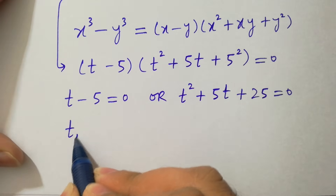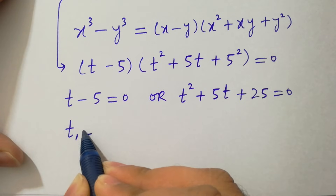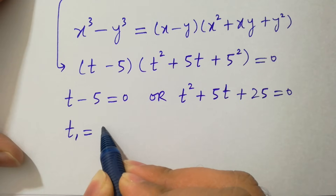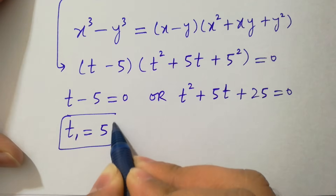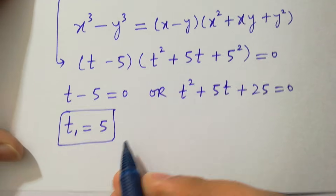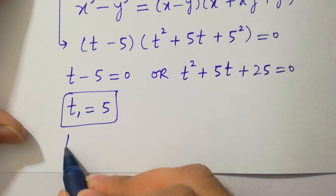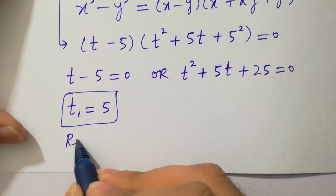Here we get the value of t. We can say t₁ equals 5, which is our real solution.